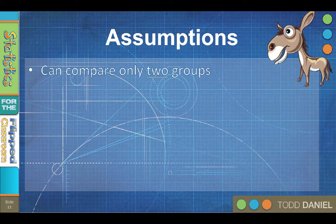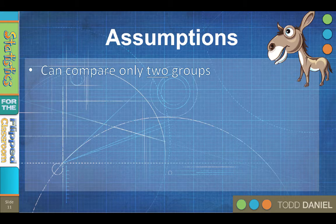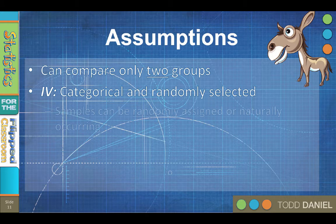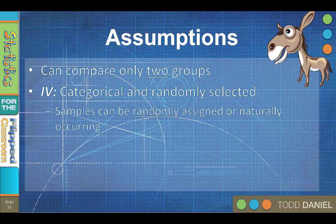The next non-negotiable assumption for the independent samples t-test is that the independent variable must be categorical, again with only two groups or categories, and that the members of those two groups were randomly selected. The two groups must be either randomly assigned or naturally occurring.